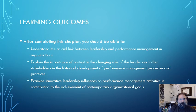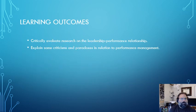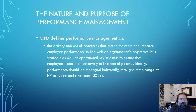The learning outcomes: after completing this chapter, you should be able to understand the crucial link between leadership and performance management in organizations, explain the importance of context in the changing role of the leader and other stakeholders in the historical development of performance management processes and practices, examine innovative leadership influences on performance management activities, and critically evaluate research on the leadership-performance relationship and explain some criticisms and paradoxes in relation to performance management.